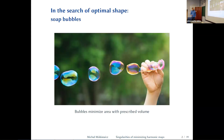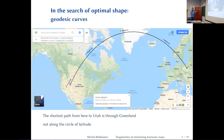As a gentle introduction: you all know soap bubbles — they minimize area with a prescribed volume, wiggle a lot, and then turn into a round sphere. Another example is geodesic curves, where we minimize something. If you want to get from here to Utah, the shortest path is called the minimizing geodesic. The path goes through Greenland, which looks surprising, but if you look at a globe it isn't.